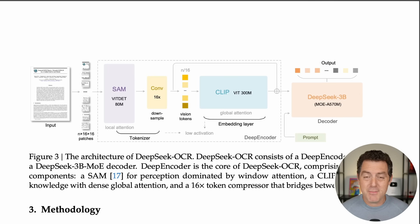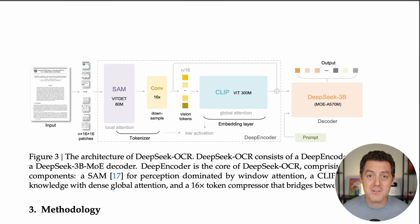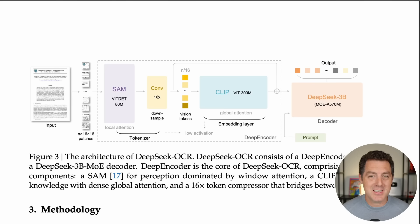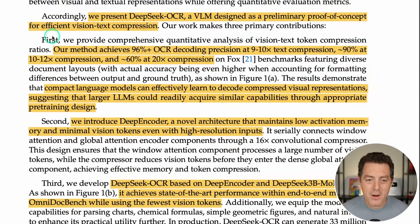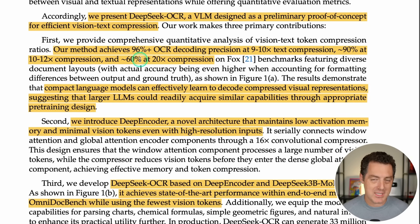Imagine we have a Gemini model with 1 million or 2 million tokens — really the largest we've seen and insane to think about. All of a sudden we can give it 10X, so it has 10 million or 20 million tokens to work with, with just a slight increase in latency from the text-to-image and image-to-text conversion. According to the paper, the method achieves 96%+ OCR decoding precision at 9 to 10X compression, 90% at 10 to 12X compression, and 60% at 20X. So as compression increases, accuracy definitely decreases.